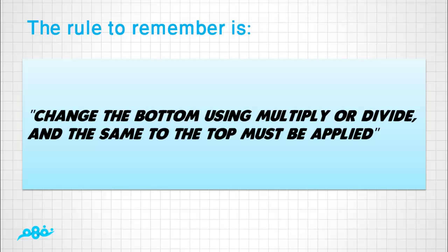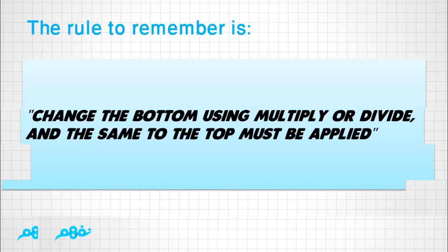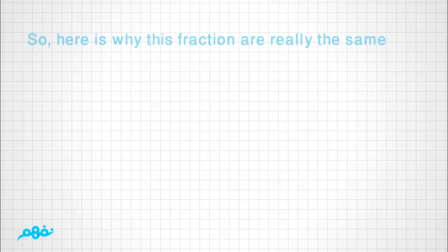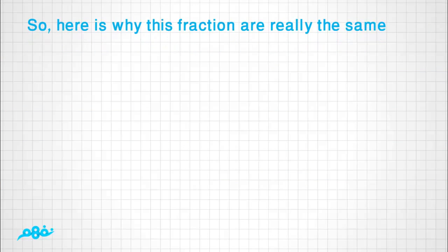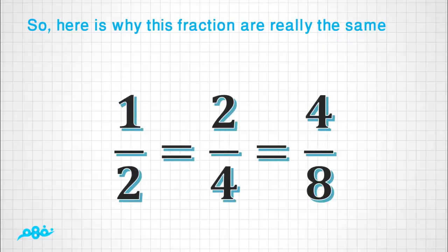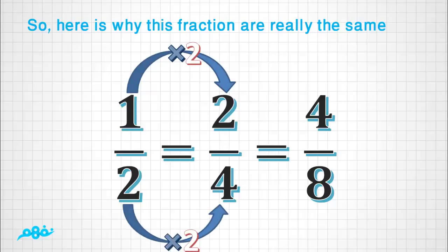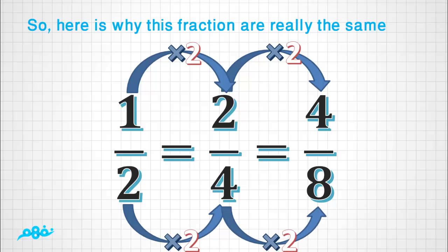So here is why these fractions are really the same: 1/2 = 2/4 = 4/8 because 1×2 / 2×2 = 2/4, and 2×2 / 4×2 = 4/8, and 4×2 / 8×2 would equal 8/16.